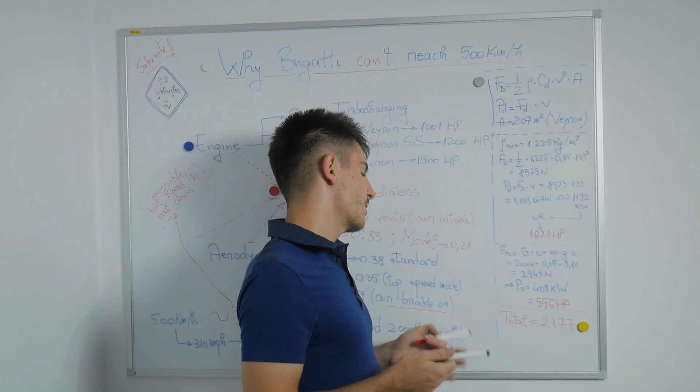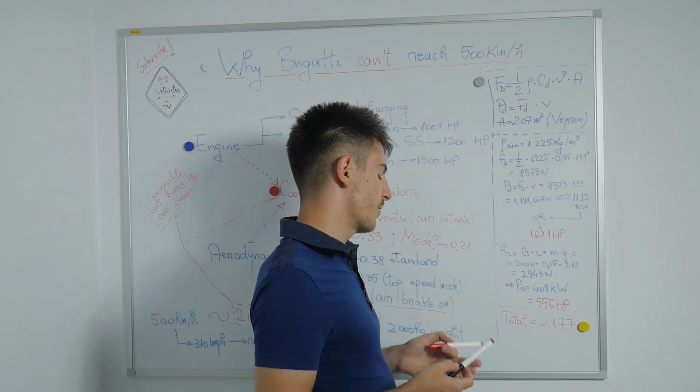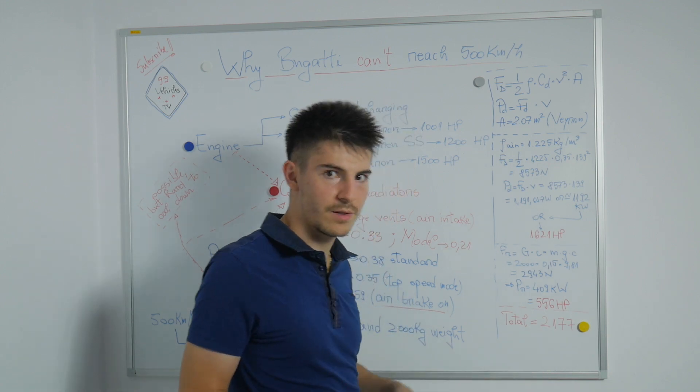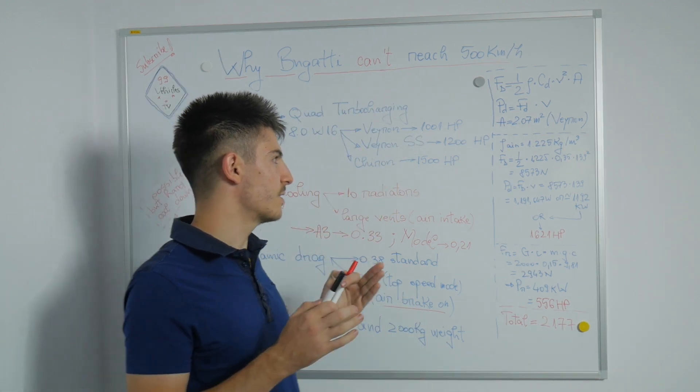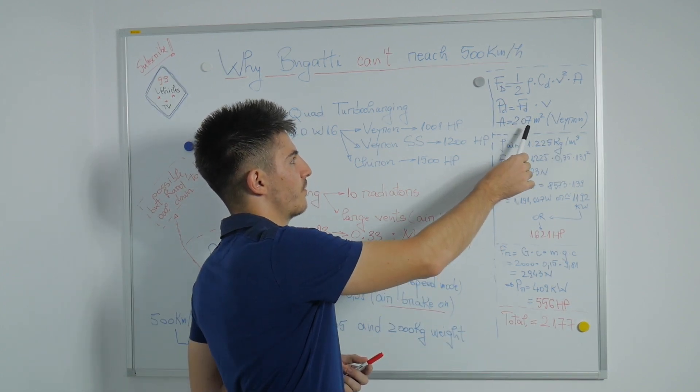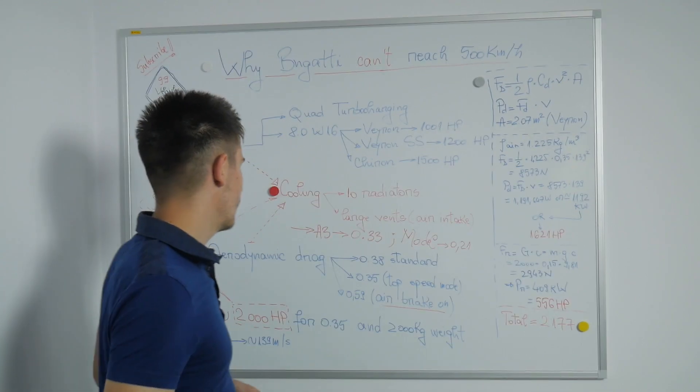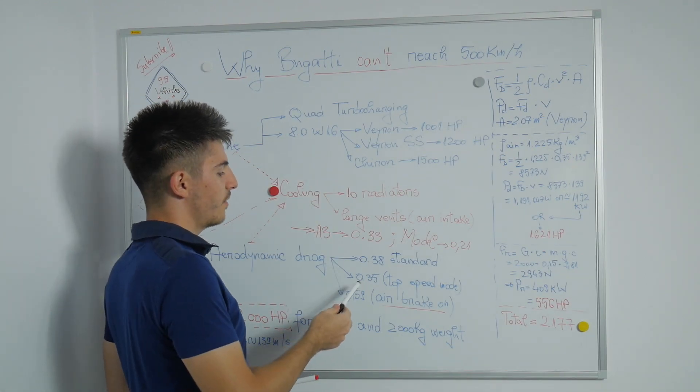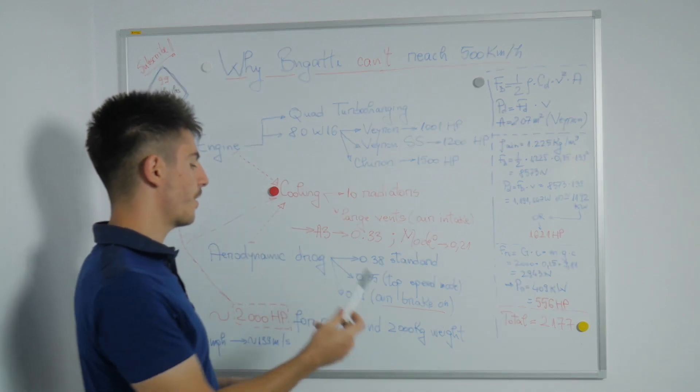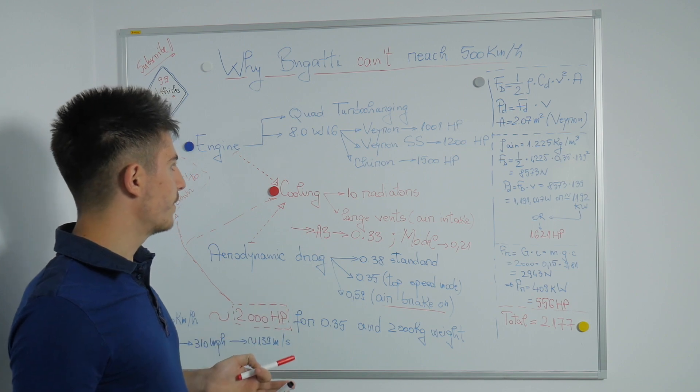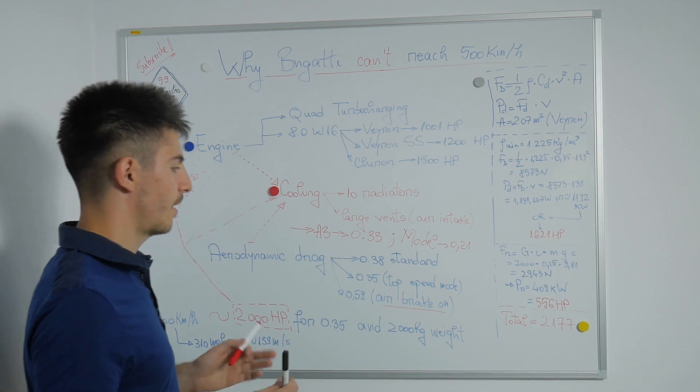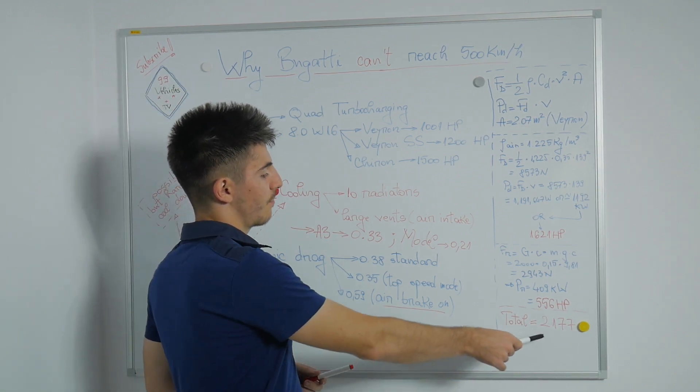To sum up, we need a total amount of power of 2,177 horsepower if we would maintain the same characteristics from the Veyron and Chiron: frontal area of 2.07 square meters, a drag coefficient of 0.35, and a total weight of 2,000 kilograms. I think we would need at least this amount of power to surpass 500 kilometers per hour.